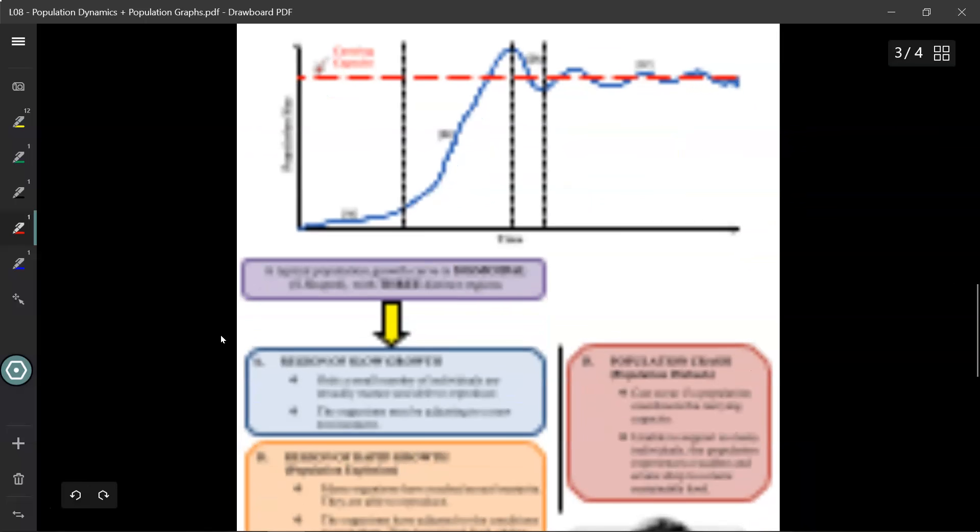The first region is the region of slow growth. So region A over here, slow growth, notice how the curve is not very steep. This typically occurs for two major reasons. The first reason is maybe the organisms were just introduced to this new ecosystem, and they are still trying to adjust or adapt to the new environment.